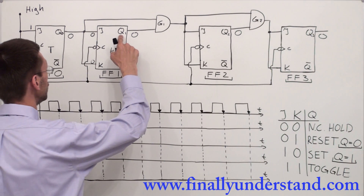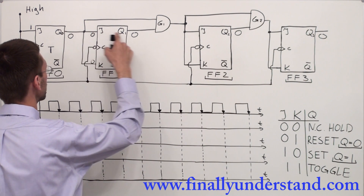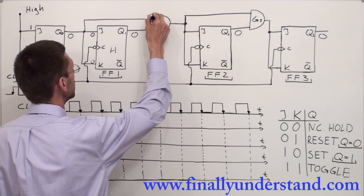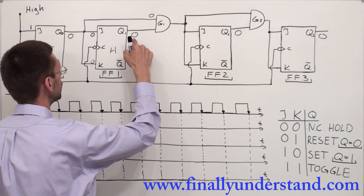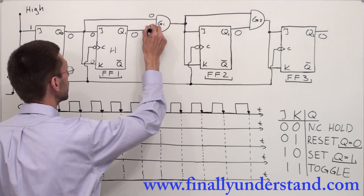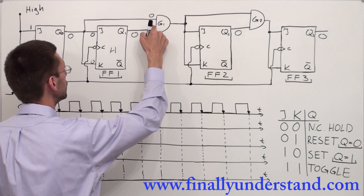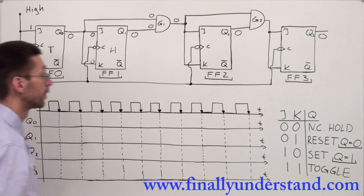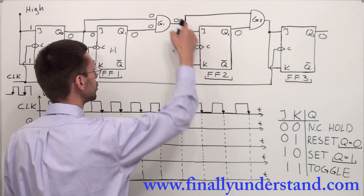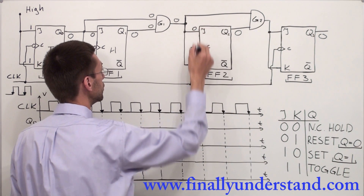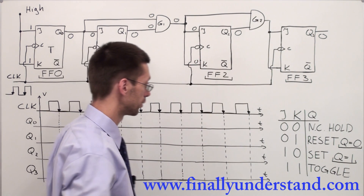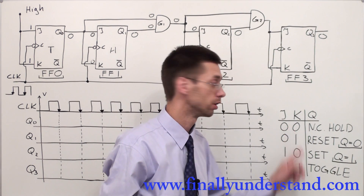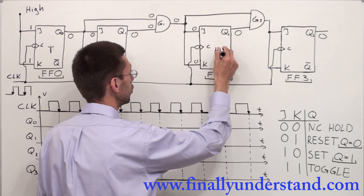Next, Q0 and Q1 are both connected to an AND gate. This AND gate receives 0 from Q0 and 0 from Q1. Any time an AND gate receives two 0s, the output is also 0. This 0 goes to the JK inputs of flip-flop 2, giving us 0 and 0 again. Since J and K are both receiving 0s, this flip-flop is set to hold mode.